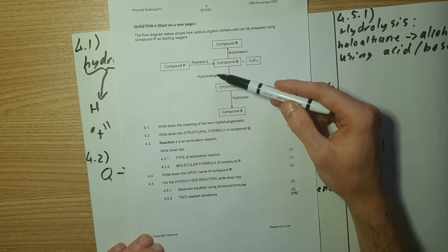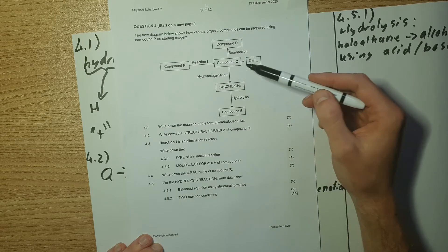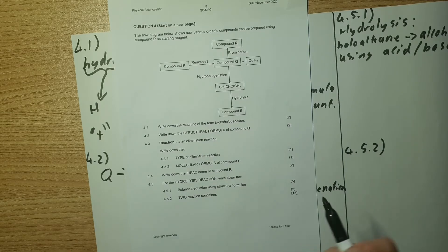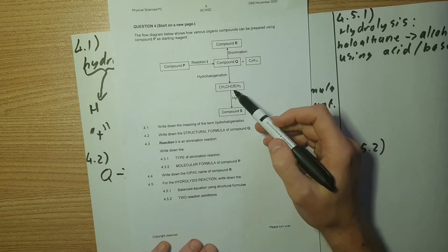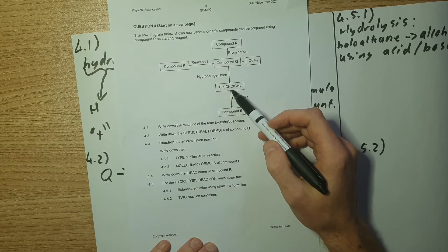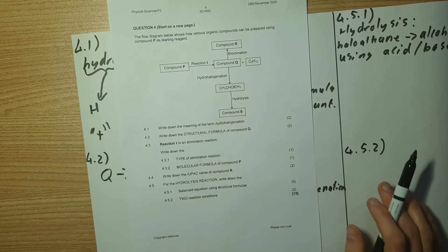Note that we said hydrohalogenation is an addition reaction so we break double bonds in order to form single bonds carbon chains with a halogen attached. We can see the halogen that was attached was Cl plus we attached a hydrogen through hydrohalogenation.